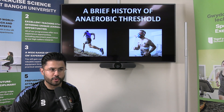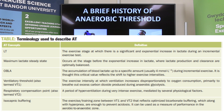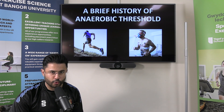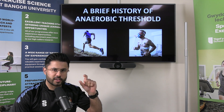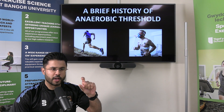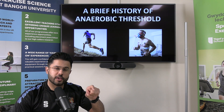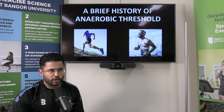We also have onset of blood lactate accumulation, often just called OBLA. This is set at a specific amount — basically once you get to four millimoles per liter of lactate during an incremental exercise test, where you're ramping up the intensity stage by stage, it's thought that four millimoles is a critical value or threshold where we start to transition into anaerobic energy sources.